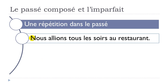The example: 'nous allions tous les soirs au restaurant.' Aller means to go, tous les soirs means every evening, au restaurant. In that case, you should definitely use the imparfait form. Nous allions tous les soirs au restaurant.